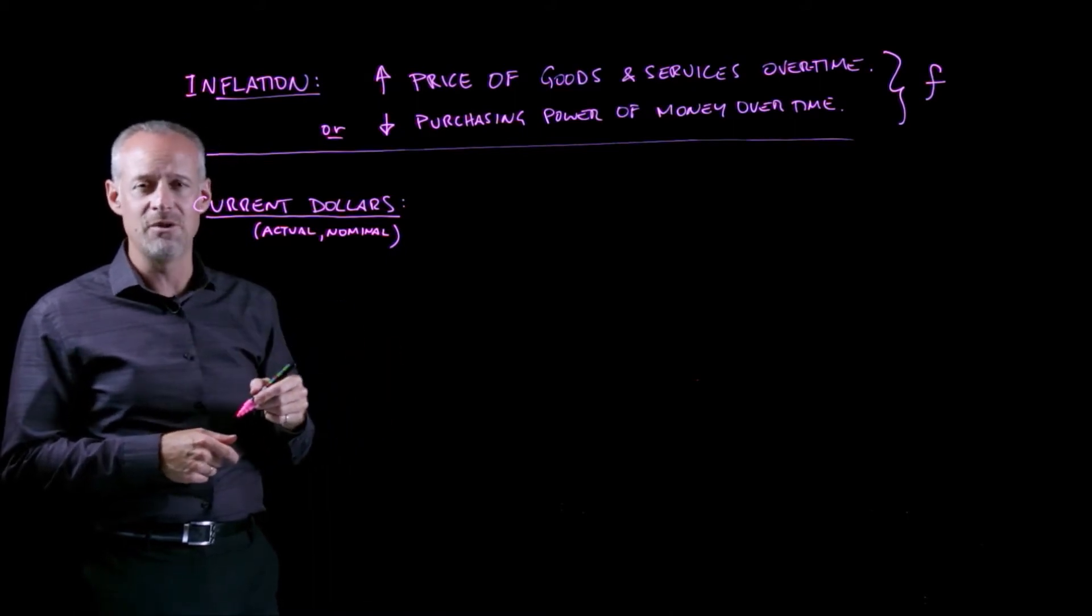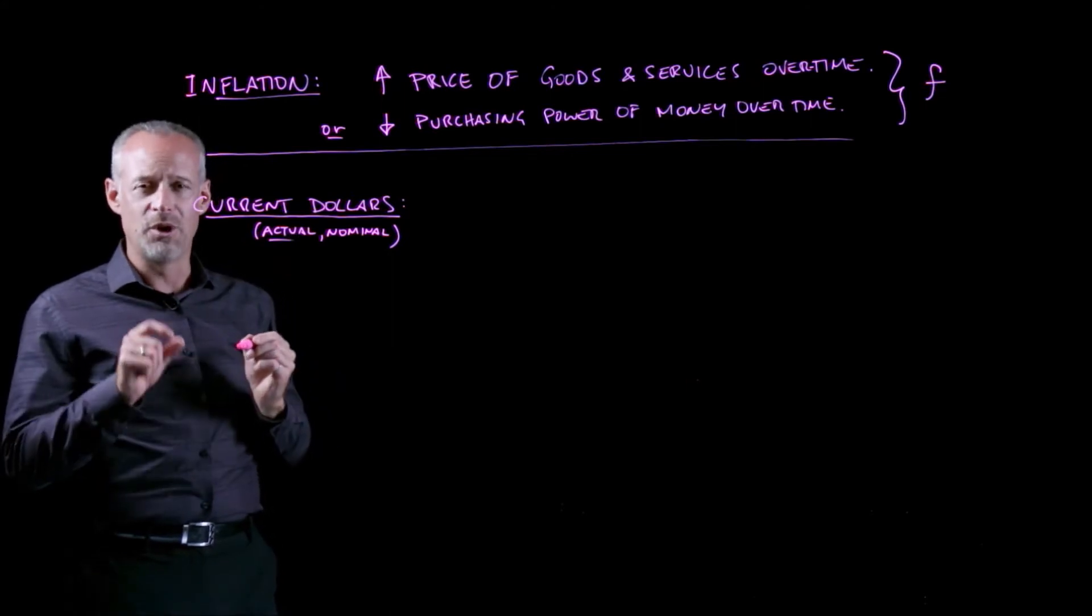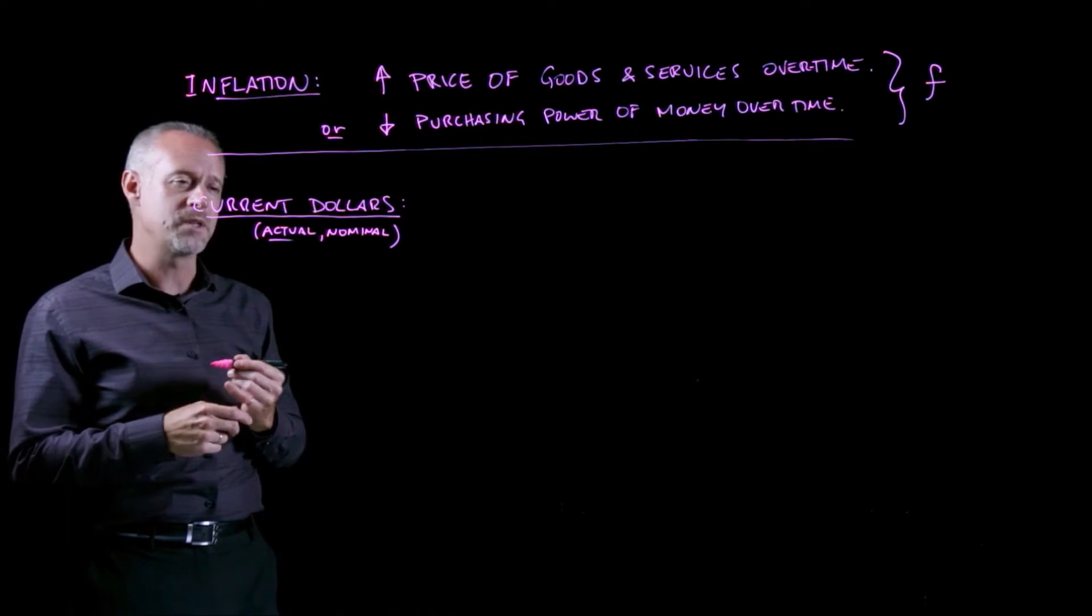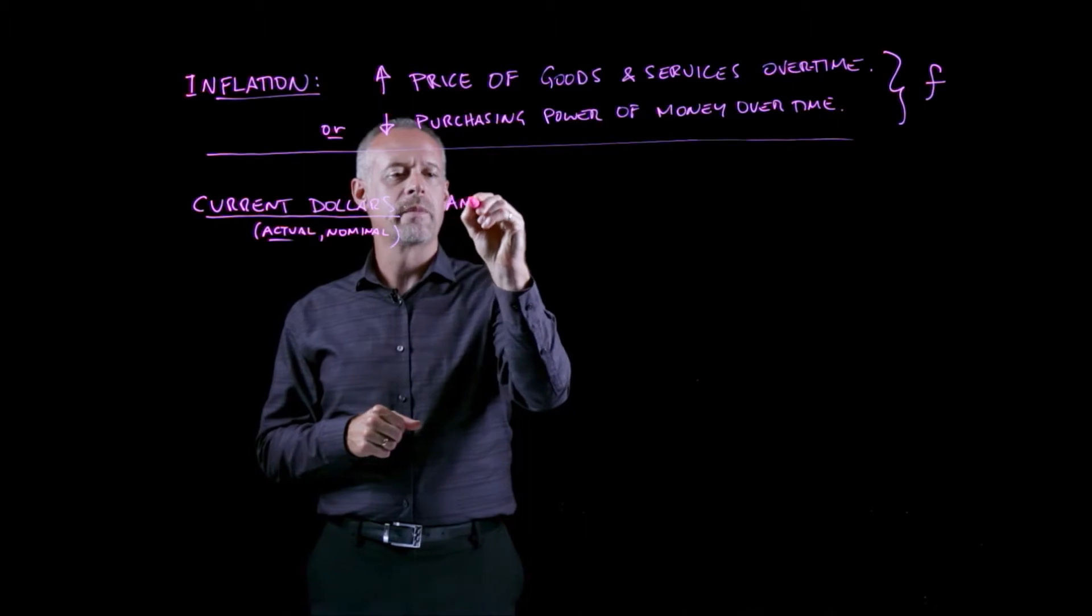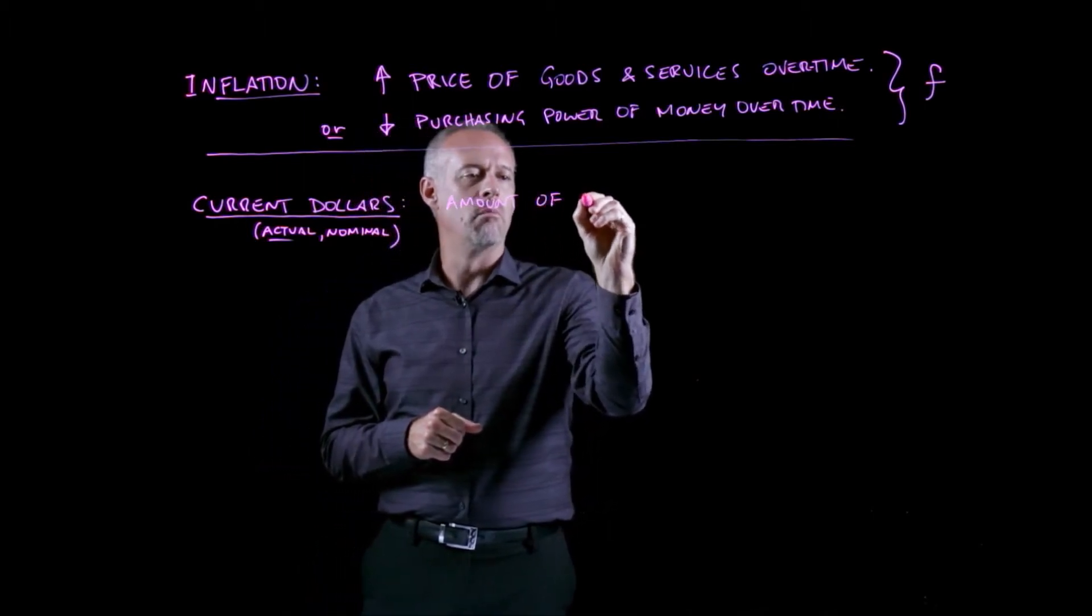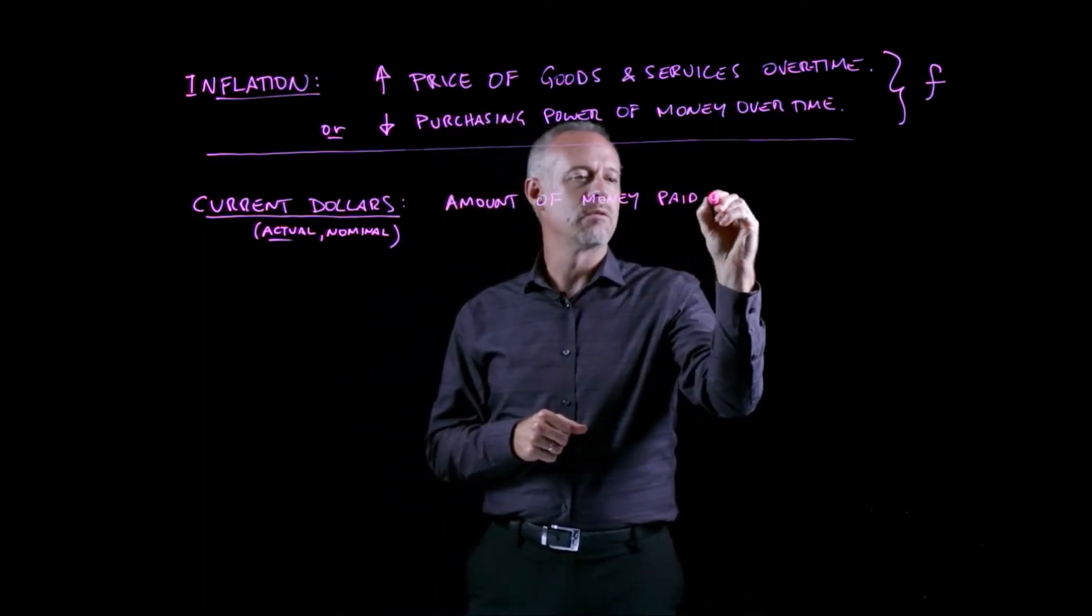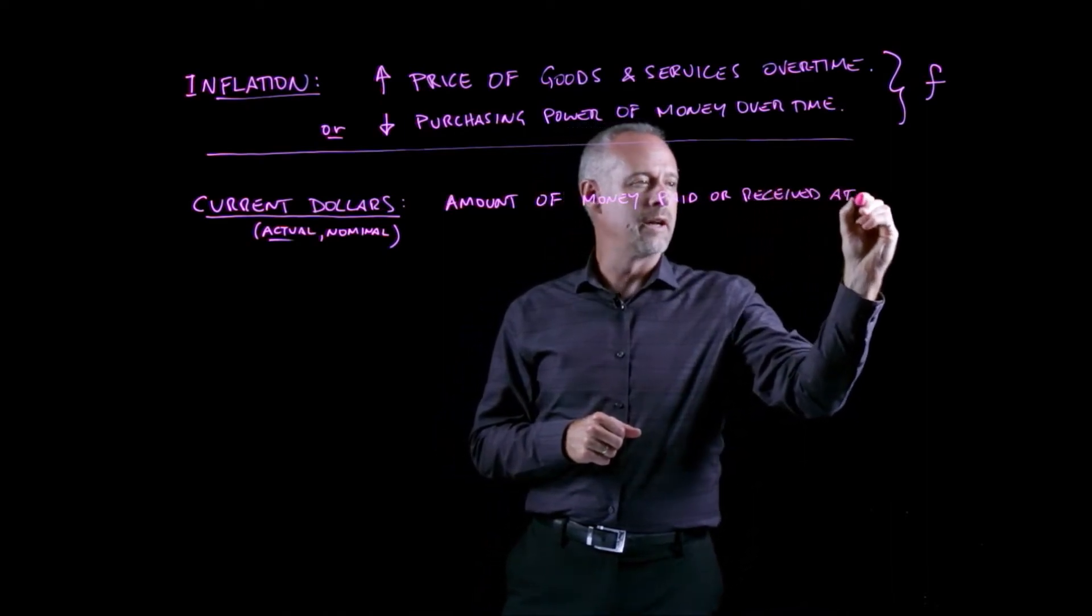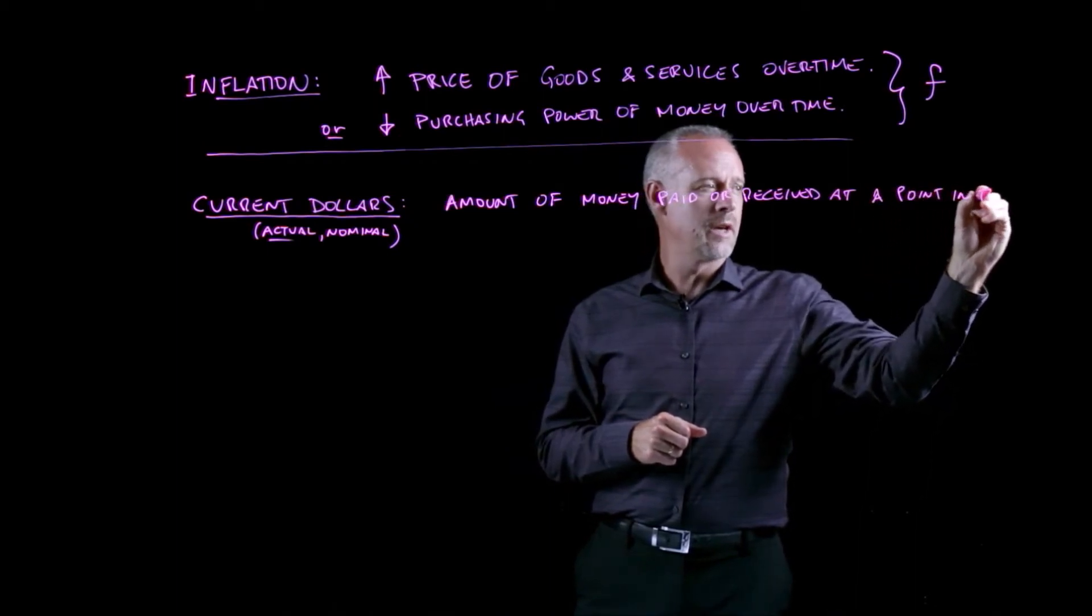Or the amount of money you put back in your wallet, the actual dollar amount that you pay for something or that you receive at a given point in time. We call this current dollars. So I could say that it's the amount of money paid or received at a point in time.